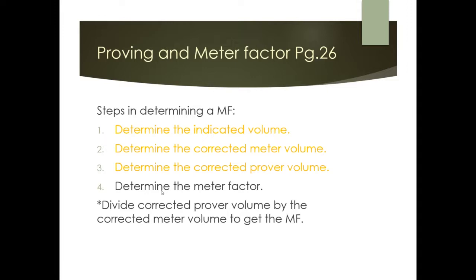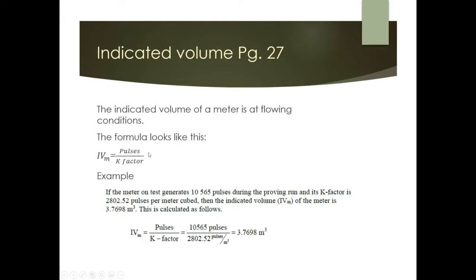To determine the indicated volume of the meter: indicated volume = number of pulses ÷ K-factor. Example: if the meter generates 10,565 pulses during a proving run and its K-factor is 2802.52 pulses per cubic meter, then the indicated volume = 10,565 ÷ 2802.52 = 3.7698 m³.